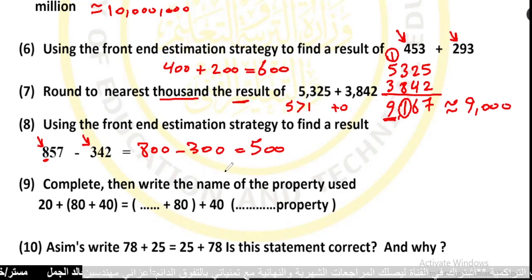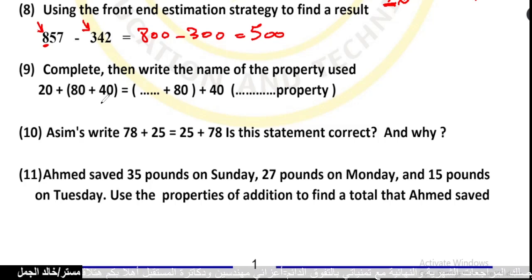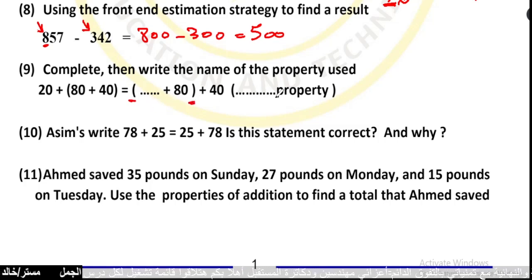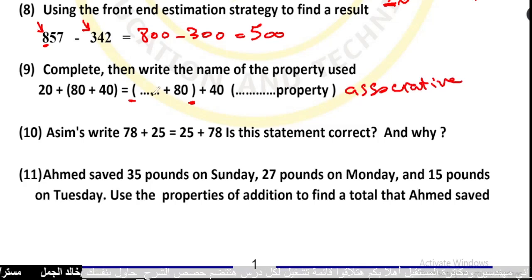Number 9: complete then write the name of the property used. 20 plus 80 plus 40 equals — I see balances. The property used is the associative property of addition: 20 plus (80 plus 40).